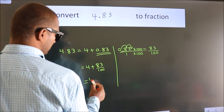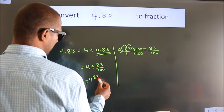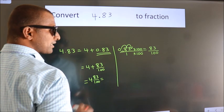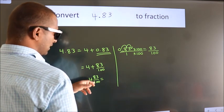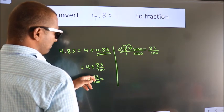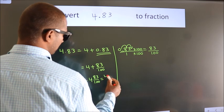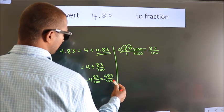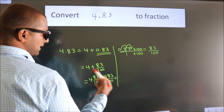In mixed fraction it is 4 and 83 over 100. And in improper fraction it is 4 into 100, 400 plus 83. 483 by 100 is our fraction.